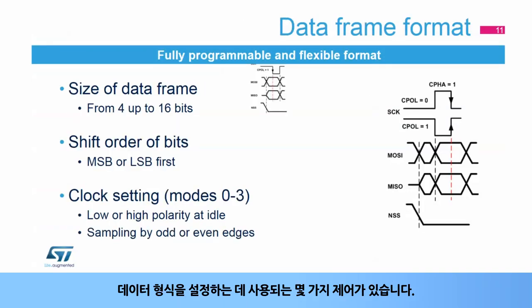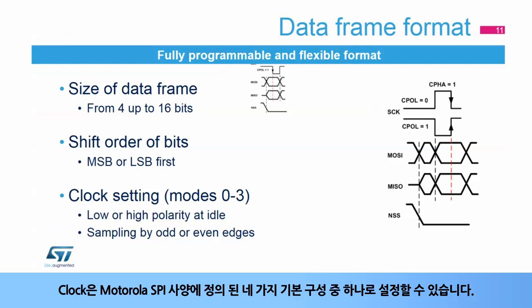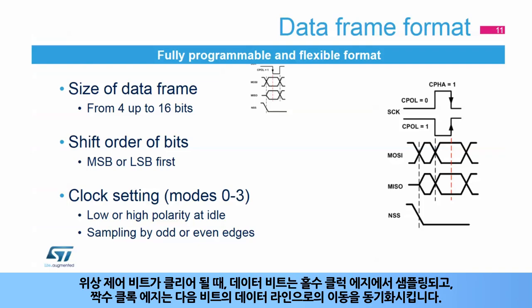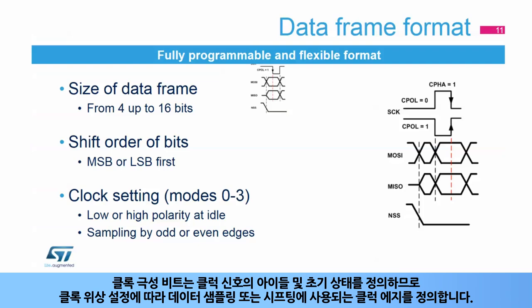There are a few controls that are used to set up the data format. Users can define the data frame size and the transmit order of the data bits. The clock can be set to one of four basic configurations defined in the Motorola SPI specification. The combination of two bits controls the polarity and phase of the clock signal. When the phase control bit is cleared, data bits are sampled on the odd clock edges, and the even clock edges synchronize the shifting of the next bit onto the data line. The opposite occurs when the phase control bit is set. The clock polarity bit defines the idle and initial state of the clock signal, and therefore which clock edge is used for data sampling or shifting, depending on the clock phase setting.